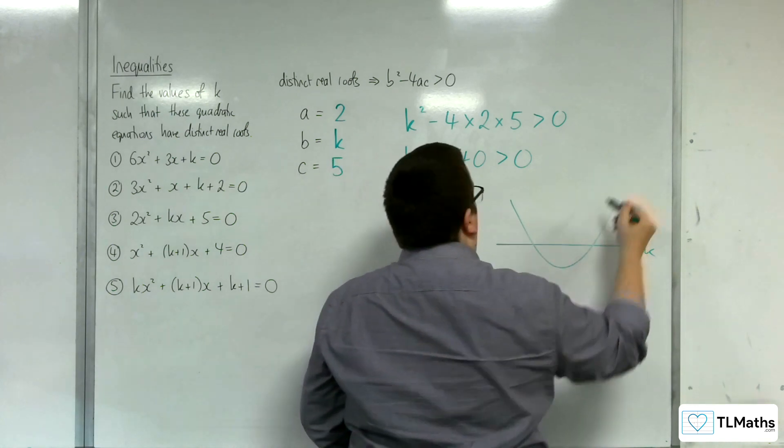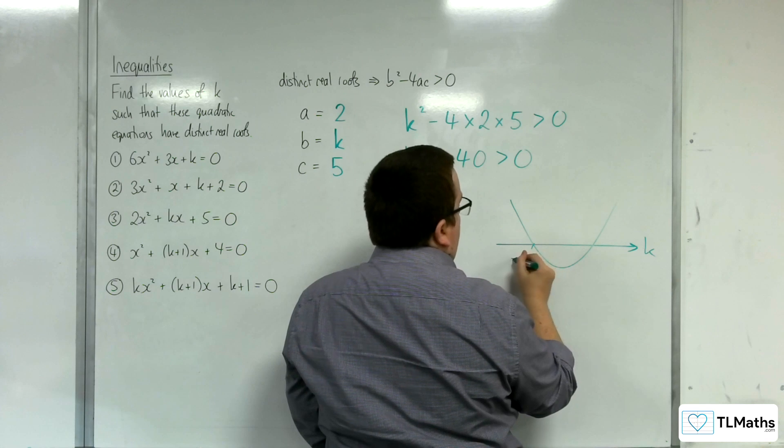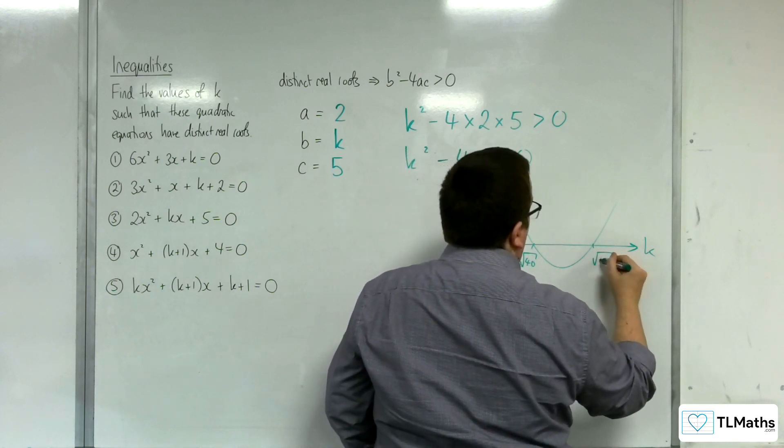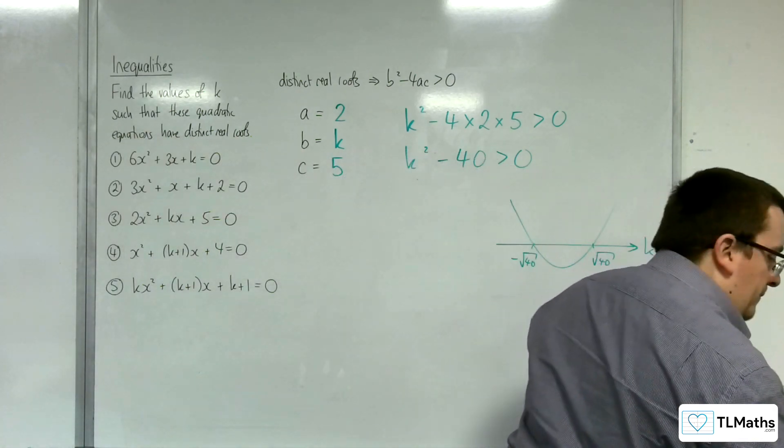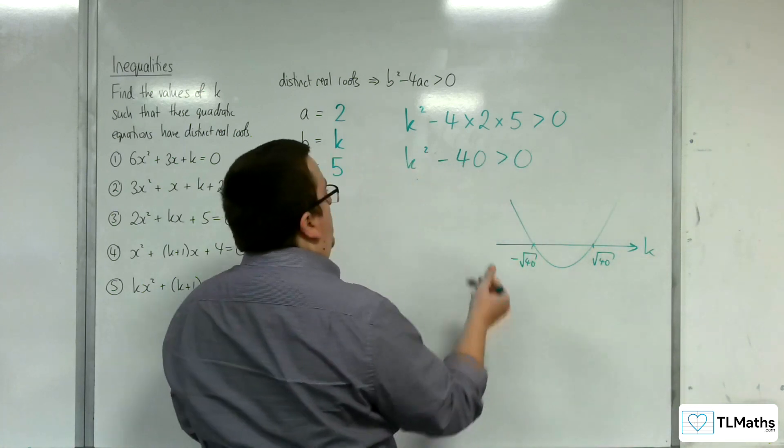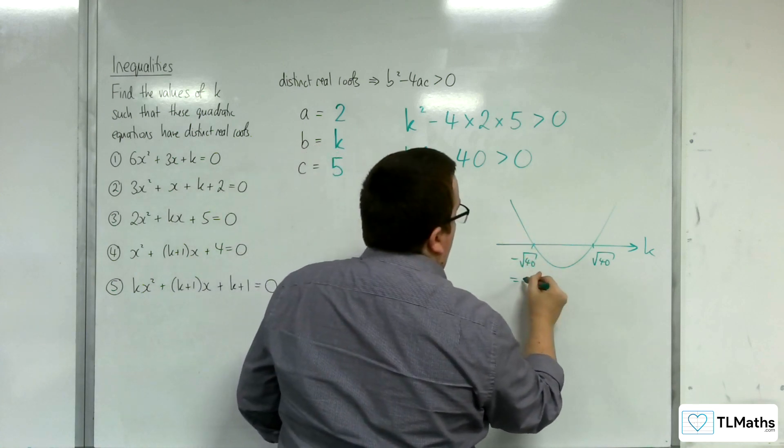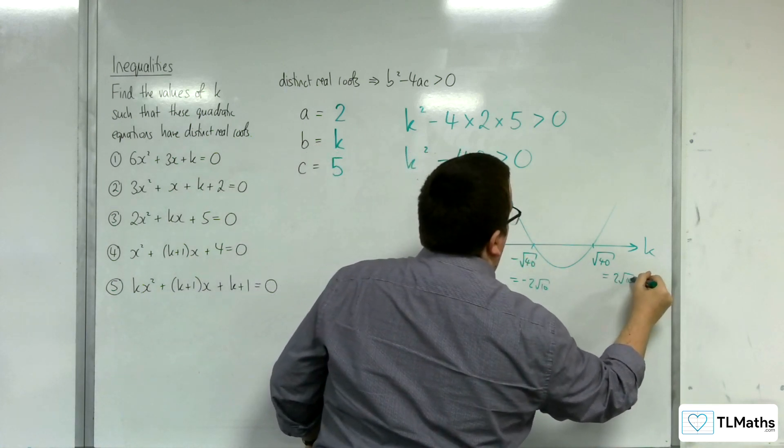Here is the quadratic, k squared minus 40. This would be the negative square root of 40, and that would be the positive square root of 40. If you square root 40, you can simplify it down to 2 root 10. So, if you're looking at this as minus 2 root 10, and that's 2 root 10.